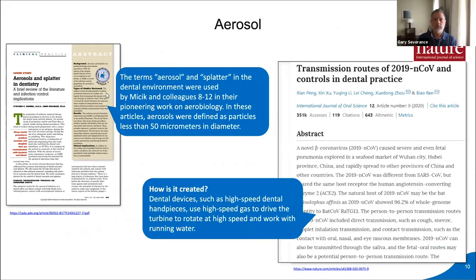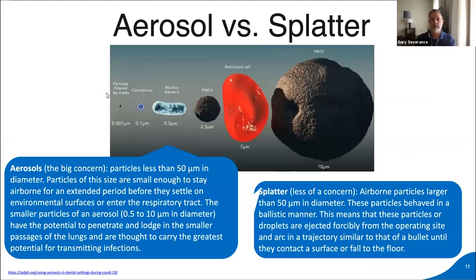Back in 2004, Molinari et al. defined what aerosol and splatter were and the differentiation between them, primarily during the first SARS outbreak. When comparing aerosol versus splatter, the key factor is the size of the droplet. Aerosols stay airborne longer while splatter drops ballistically — like a bullet — tending to fall to the floor. Aerosols, however, can follow the airflow. In many offices we don't know what that airflow is; hygienists, assistants, and dentists moving around the office create their own airflow and carry air with them.